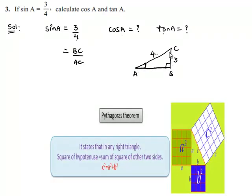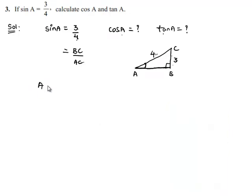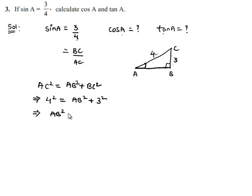By applying the Pythagoras theorem in triangle ABC, let us find the value of AB. By Pythagoras theorem, the square of the hypotenuse is equal to the sum of squares of the other two sides. So AC² = AB² + BC², which gives 4² = AB² + 3², so AB² = 16 − 9 = 7, which implies AB = √7.